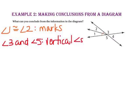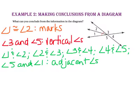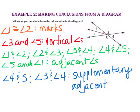Now let's look for adjacent angles. Angle 1 and angle 2 are adjacent; angle 2 and angle 3 are adjacent; angle 3 and angle 4 are adjacent; angle 4 and angle 5 are adjacent; and angle 5 and angle 1 are adjacent. They all share a common ray and a common vertex but do not share common interior points. For angles that are adjacent and supplementary, look at angle 5 and angle 4, and angle 4 and angle 3 — these pairs are both adjacent and supplementary.